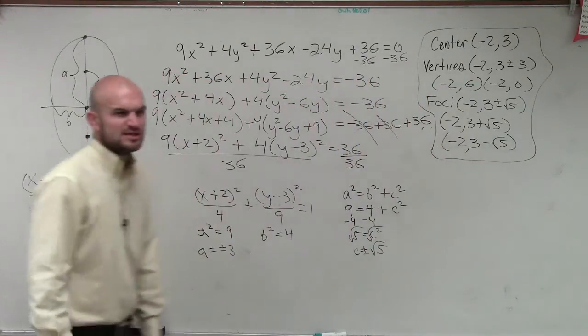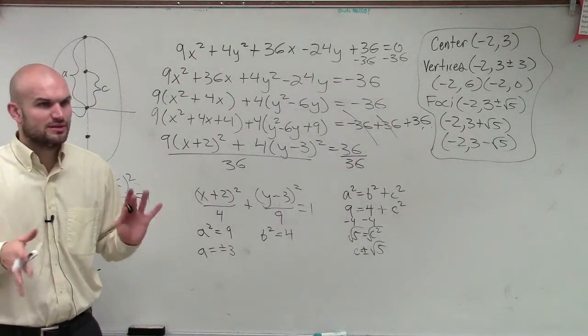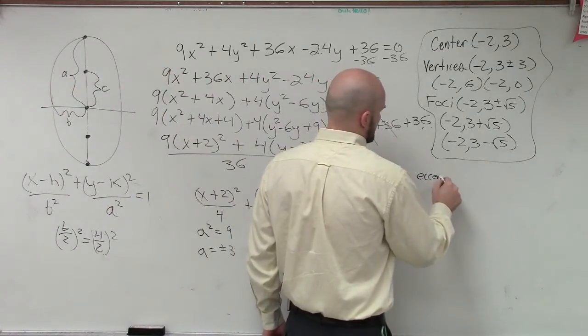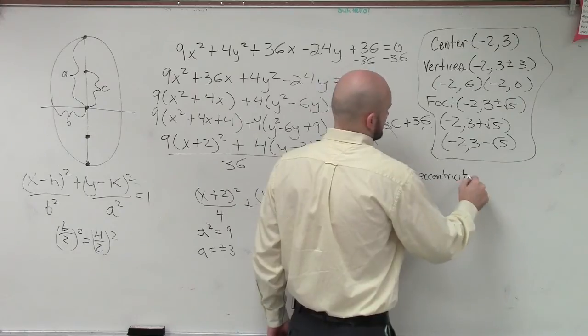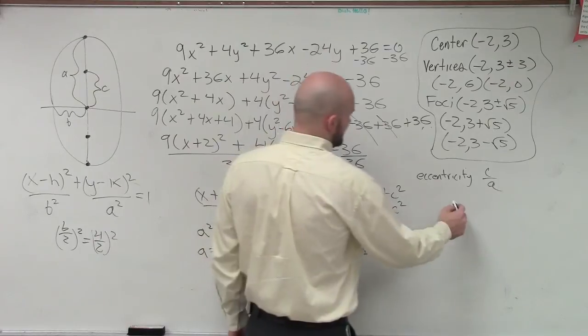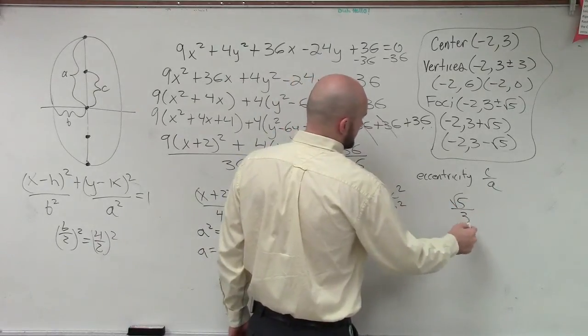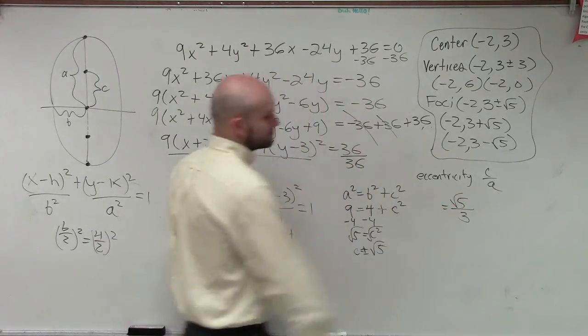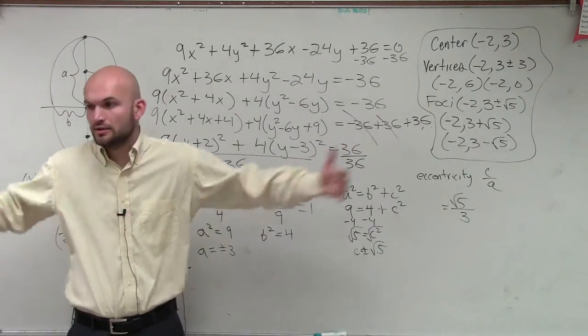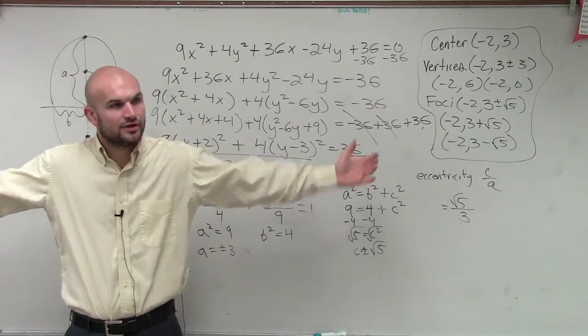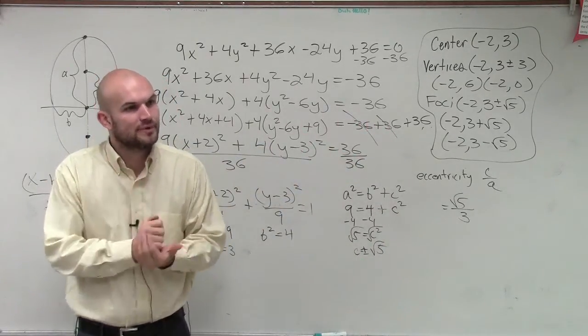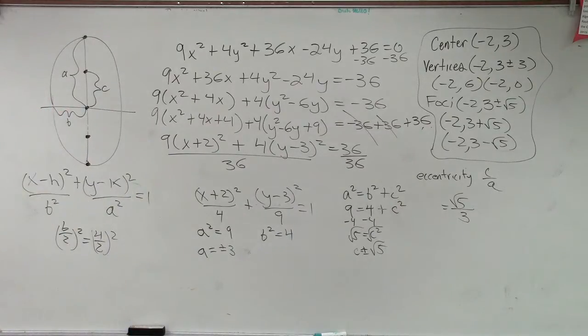We talked about eccentricity a little bit last time. If they ask you to find the eccentricity, it's just going to be c over a. So in this case, our c is √5 / 3. Now remember, the closer that gets to 1, the wider out we have our ellipse. And the closer that gets to 0, the more it looks circular. Okay, that's it. Thank you.